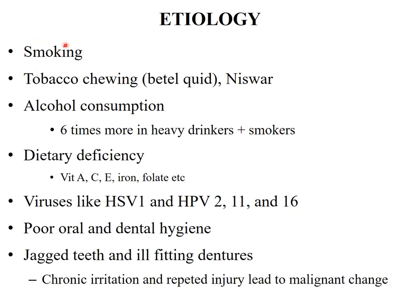Etiology: smoking is the most common factor, followed by tobacco chewing, betel quid chewing, and swar. Alcohol consumption, especially combined with smoking, can cause 6 times more oral cavity cancers. Dietary deficiencies of vitamins A, C, E, iron, folate, and other elements can also lead to carcinoma of the tongue. Viruses — especially human papillomavirus types 2, 11, and 16, herpes simplex virus, and Epstein-Barr virus — are also considered etiological factors. Poor oral and dental hygiene, jagged teeth, and ill-fitting dentures causing chronic irritation and repeated injury can lead to malignant transformation.